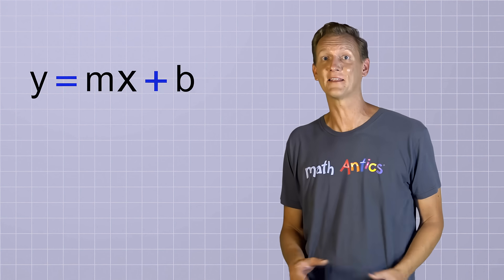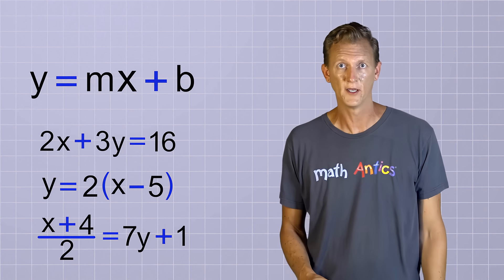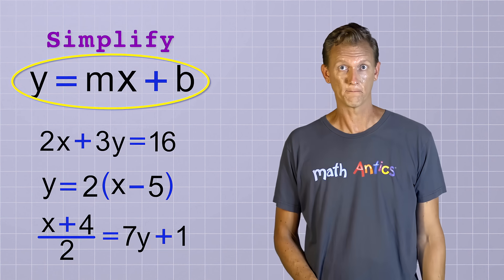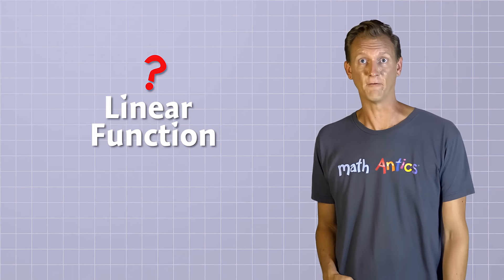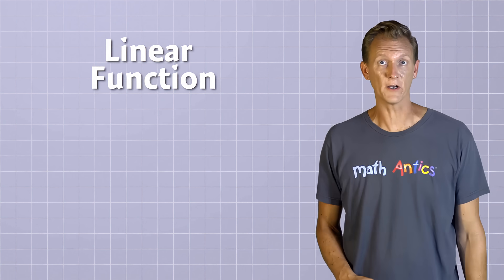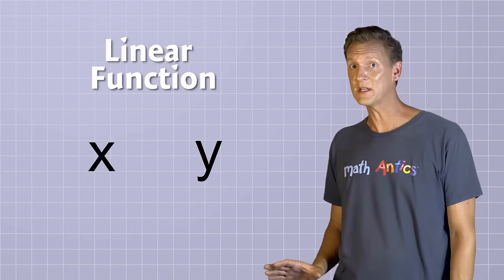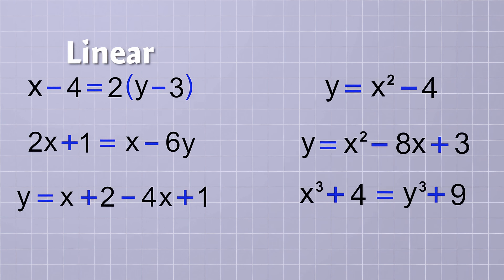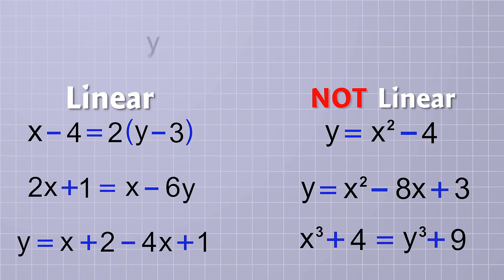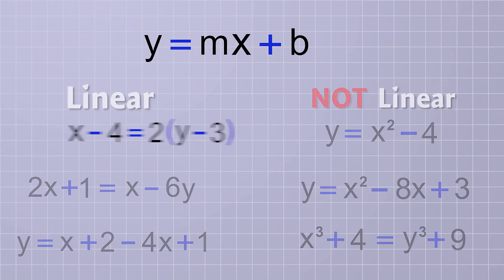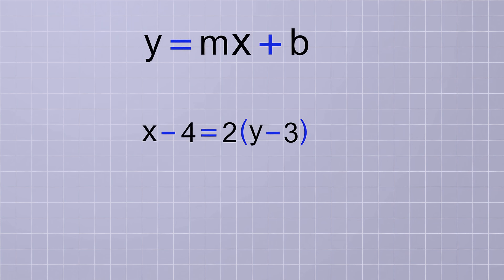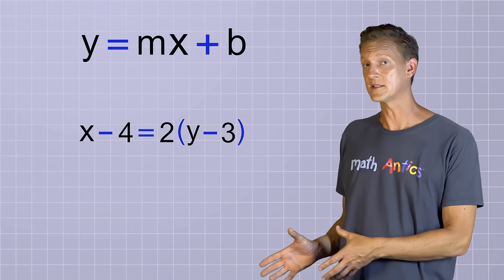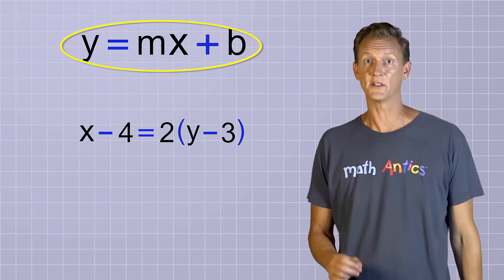Of course, you'll encounter linear equations in many different forms. But as long as they are truly linear functions, you can simplify them into y equals mx plus b format. To be a linear function, equations can only contain first-order variables — meaning x and y terms can't be squared, cubed, or raised to any powers other than 1. Some equations are linear, but others are not. Let's try rearranging one to see how it works: x minus 4 equals 2 times the quantity y minus 3.